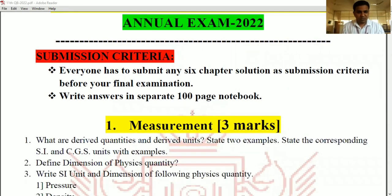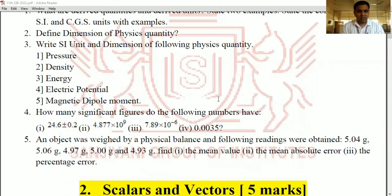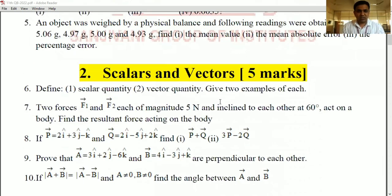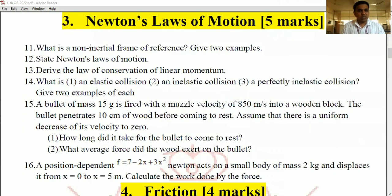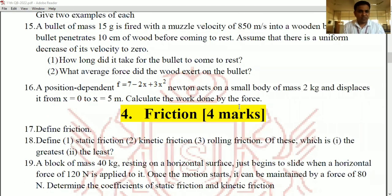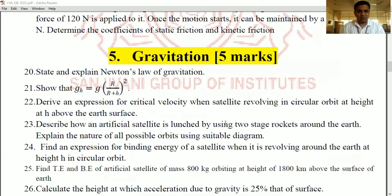I have mentioned 13 chapters and I have listed some important questions as well. So measurement will be for three marks and it has five questions. Then scalar vector, five marks, Newton's laws of motion, five marks because all three chapters have been covered in the first time examination as well. So I have given bit of less weightage. Now friction, I will be asked for four marks.